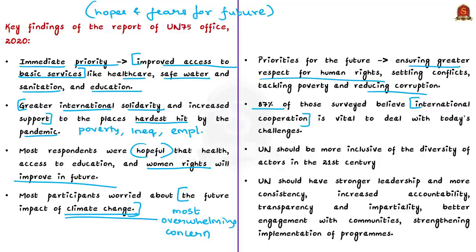Climate change is one of the most pressing challenges. According to the report, the inability to stem the climate crisis and destruction of natural environment is viewed as the most overwhelming medium and long-term concern. Other major priorities for the future include ensuring greater respect for human rights, settling conflicts, tackling poverty, and reducing corruption. 87% of participants believed international cooperation is vital to deal with today's challenges like COVID-19 pandemic. There was a call for United Nations to be more inclusive of the diversity of actors in the 21st century. There is a need for greater inclusion of civil society, women, youth, vulnerable groups, cities, local authorities, businesses, and international organizations.